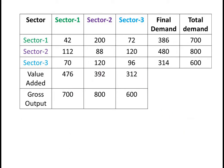Now using the concept of the input coefficient, a_ij is the amount of output of the i-th sector used as input to produce one unit of output of the j-th sector. It equals x_ij divided by X_j, where x_ij is the amount of output of the i-th sector used as input in sector j, and X_j is the total output of sector j.